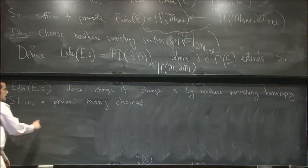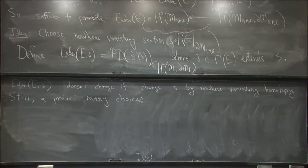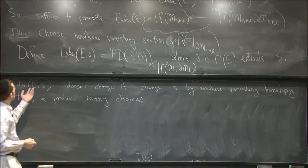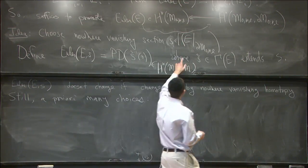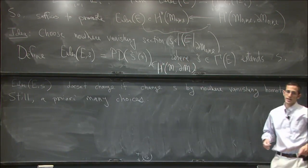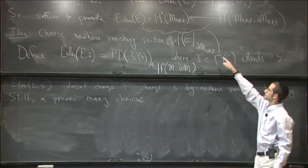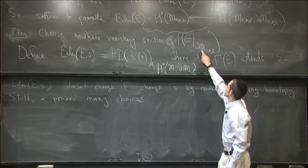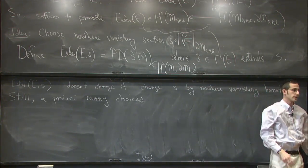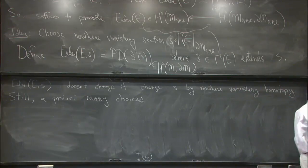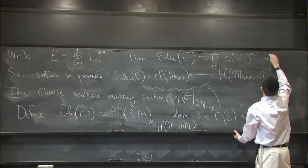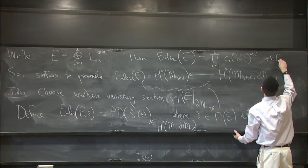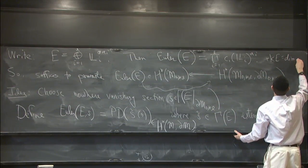There are still, a priori, many choices even up to nowhere-vanishing homotopy, so you have to choose a canonical one. You can always choose such a nowhere-vanishing section, because the rank of this bundle is always bigger than the dimension of this space by 1 — the rank of E equals the dimension of M plus 1.